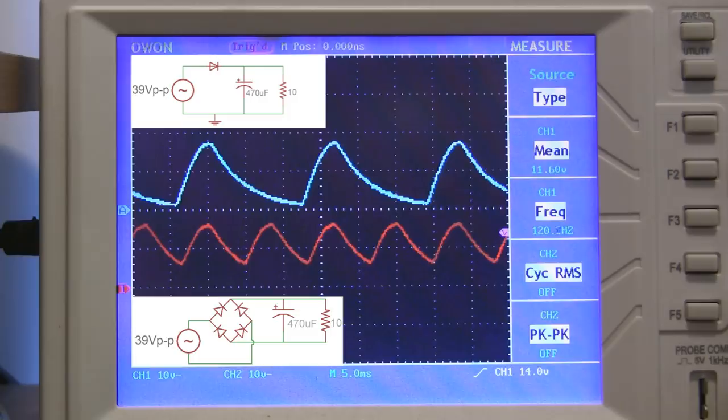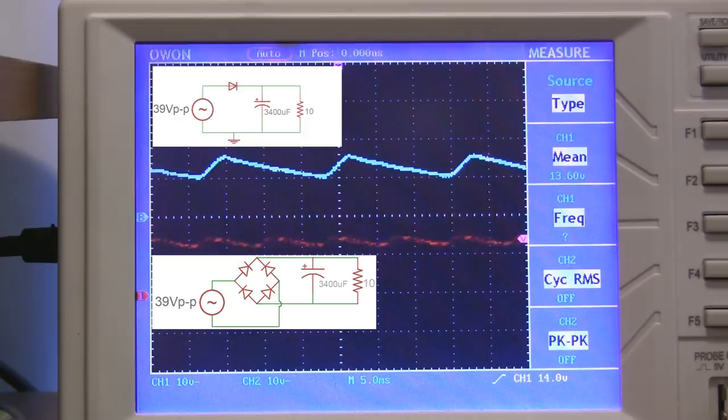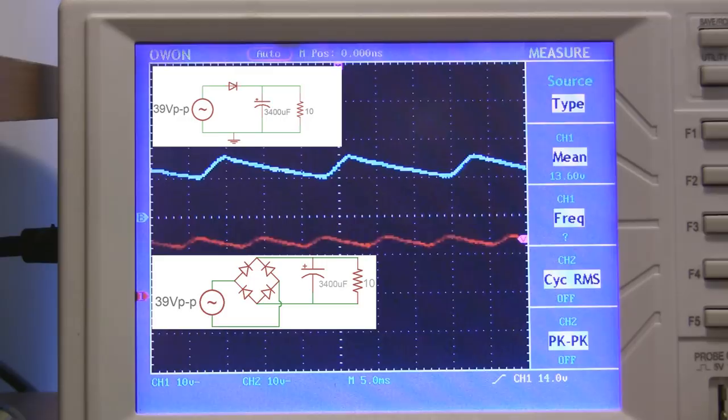Now let's compare the single diode with 3400 microfarads to the bridge rectifier with 3400 microfarads. Now we're getting an average of 13.5 volts instead of 12.5 volts and we only have about one or two volts of ripple. In other words the combination of a bridge rectifier with high amounts of capacitance can turn almost any high current AC supply into a useful high current DC supply.